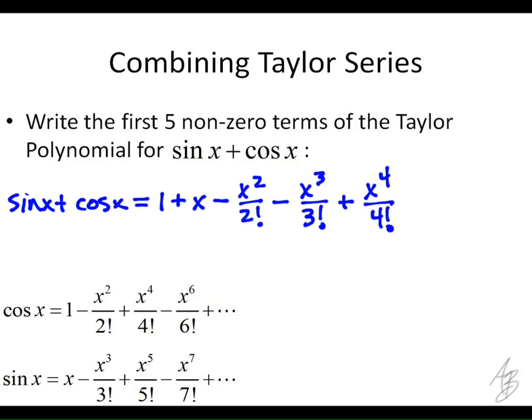This is a pretty easy one. All we have to do here, and since none of the powers here match up, we don't have to worry about combining terms. So we've got the first five terms there just by taking the first three from cosine and the first two from sine.